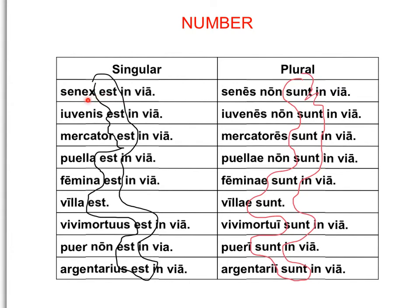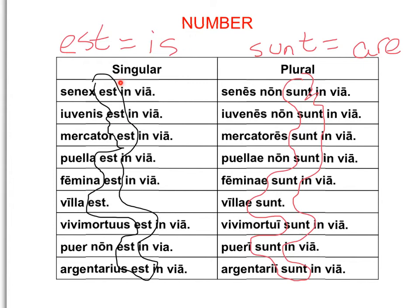The old man is in the road; the old men are not in the road. The young man is in the street; the young men are not in the street. So again, est equals "is" and sunt equals "are." When the number of the verb of being is third person singular, we use est. When it is third person plural, we use sunt. Notice also that sunt ends in NT because, as we saw in part one, NT is what we use for third person plural, and est ends in T, which is what we use for third person singular.